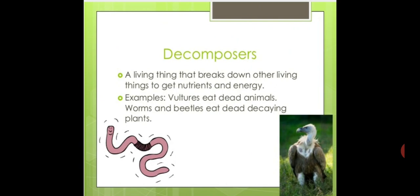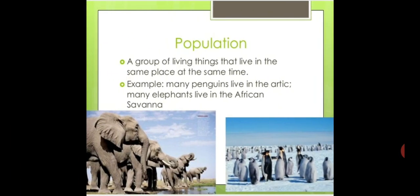There is one more important player taking a very important role in our ecosystem — called decomposers or saprophytes. A decomposer is a living thing that breaks down other living things to get nutrients and energy. Examples include vultures, which eat dead animals, and worms and beetles, which eat dead decaying plants. When they decompose dead bodies, all the nutrients go back to the soil, and this is how the whole cycle continues.